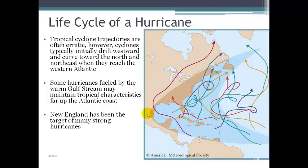The trajectories that tropical cyclones follow are often erratic — they look like crazy pieces of spaghetti on a plate — but they do follow general trends. They typically start to drift westward, and then curve towards the north and the northeast when they reach the western Atlantic. Some take a more erratic path than others, but they all generally come in at an angle from the east, then turn northwards and northeastwards.